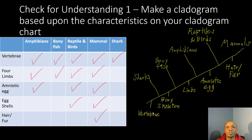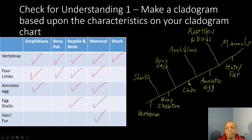Now let's see how you did on your first check for understanding. On this cladogram, sharks have the least amount of characteristics in common with the other organisms — the only thing sharks have in common with the others is vertebrae. As we move up, bony skeleton is shared by bony fish, amphibians, reptiles, birds, and mammals. Then limbs are shared by amphibians, reptiles, birds, and mammals. An amniotic egg is shared by reptiles, birds, and mammals. And then only the mammals have hair or fur — so mammals are all the way up at the top.